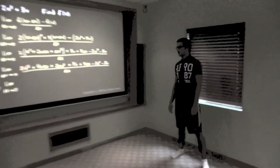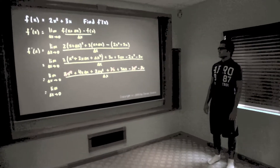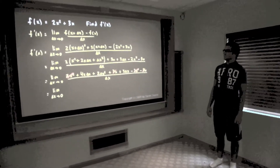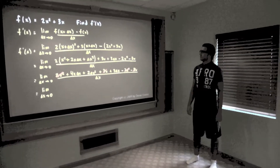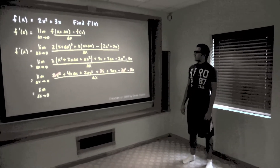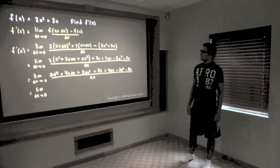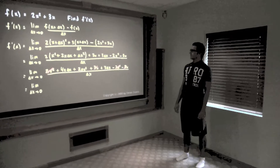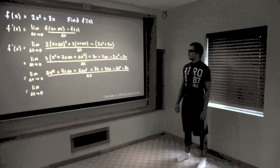Today's lesson is going to be about finding the derivative using limits. To find the derivative of f of x equals 2x squared plus 3x, we will be using the formula: limit as delta x approaches zero of f of x plus delta x minus f of x, divided by delta x.